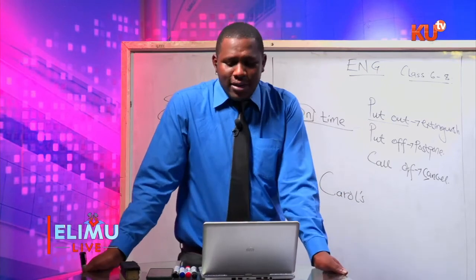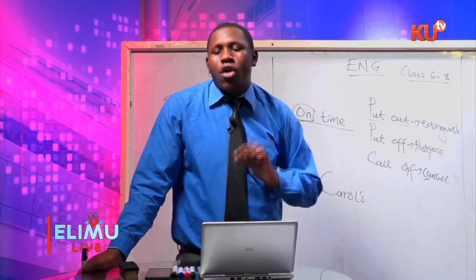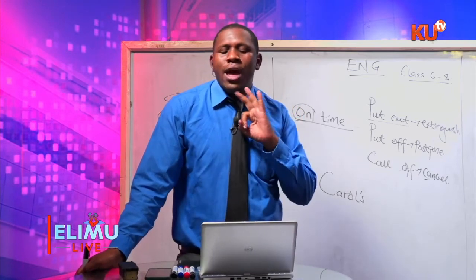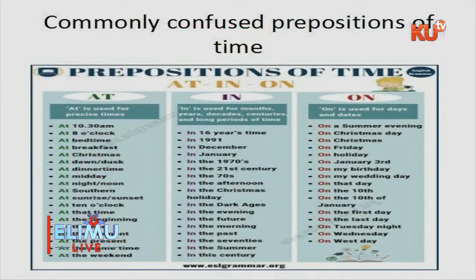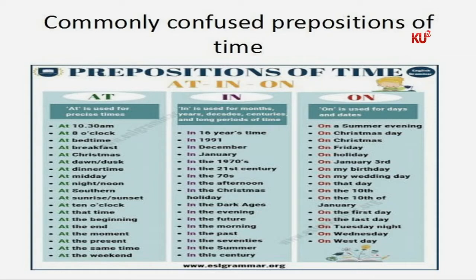Now, very important: we have commonly confused prepositions of time. Three prepositions are highly tested — at, in, and on. Preposition at is used for precise times: at 10:30 a.m., at 8 o'clock, at midday, at the weekend. These are all defined, precise times.